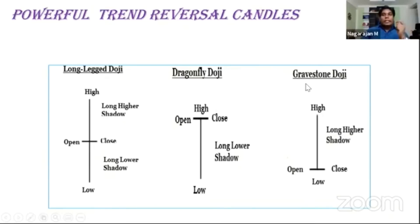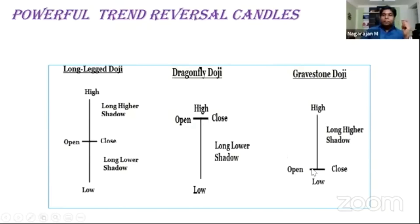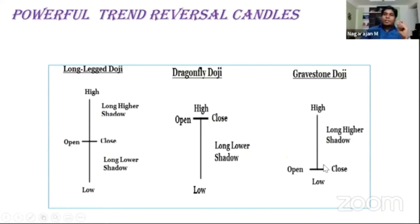The gravestone doji — the name itself explains it. Sellers have dominated. The price opened at 100 rupees, buyers tried their best to push it to a higher price, but they lost to the sellers. Sellers took control and closed the day at the low. That is where this gravestone doji comes into picture.